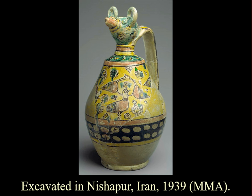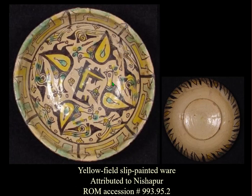Another interesting style is what Charles Wilkinson, the excavator of Nishapur, calls 'buff ware' because the clay is buff-colored. I call it yellow field ware, and it does seem to be only found or made at Nishapur. It is a slip-painted ware with the field colored yellow — possibly by antimony, though I haven't been able to prove that yet. It has lots of birds and animals with a very distinctive style. This piece is in the ROM.